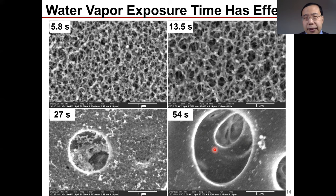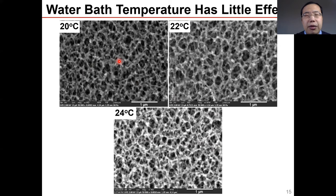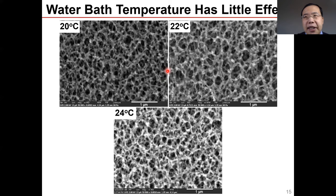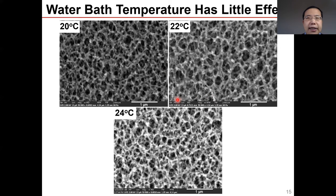Here we show the effect of water bath temperature. The structures are all very similar — all bicontinuous — meaning water bath temperature has little effect. When the cast film is exposed to water vapor, phase separation already takes place. The water bath simply removes the solvent and non-solvent from the substrate and does not affect the morphology.